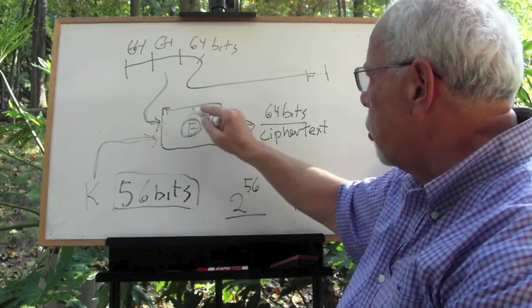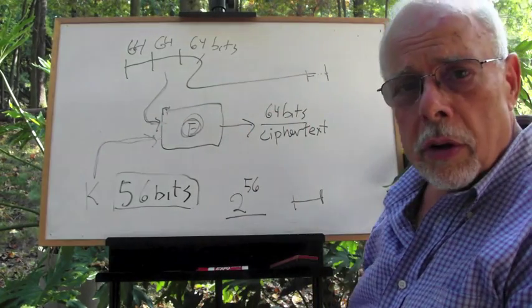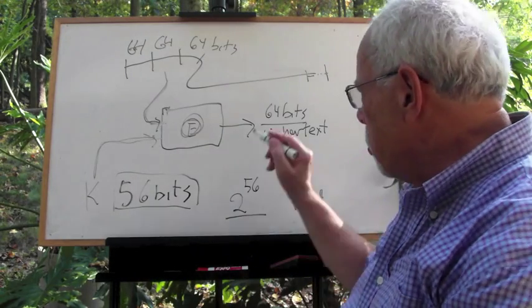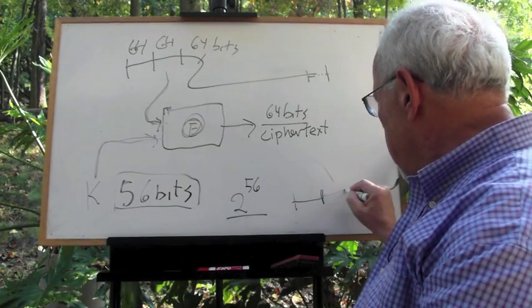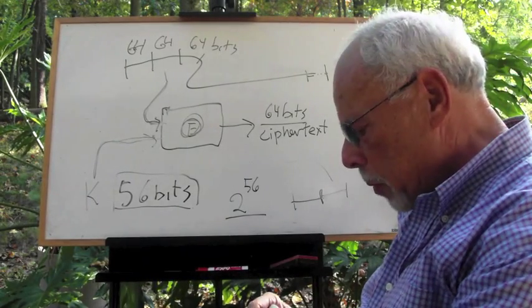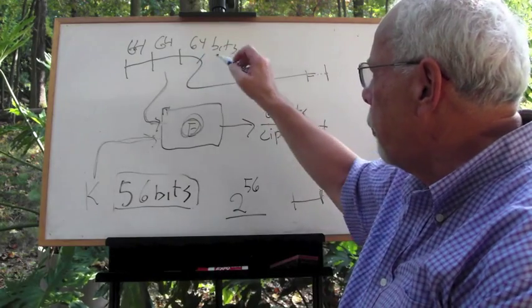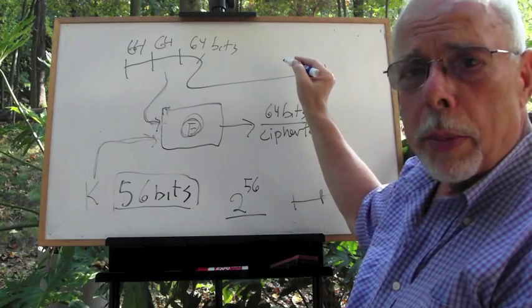With the key, we churn it around and get another 64 bits of ciphertext. What do we do with it? Lay it here next to it. Concatenate. And then we continue—the third, the fourth—until we finish the entire plaintext.